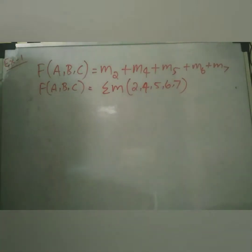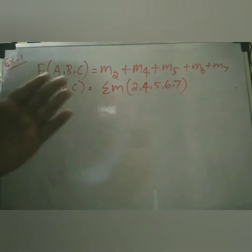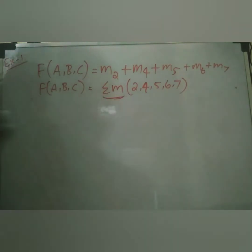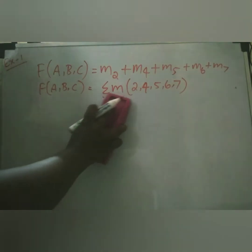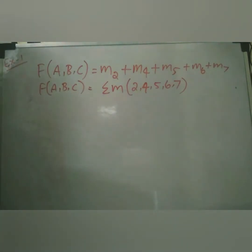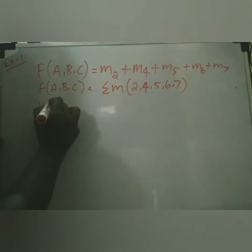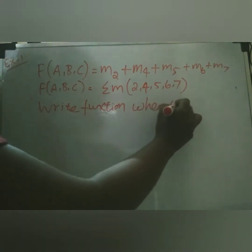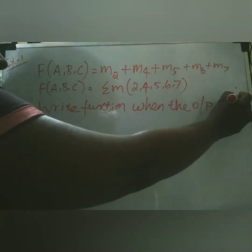Dear students, in this video we are going to solve some problems related to Sum of Product (SOP) and Product of Sum (POS) forms. The first exercise gives function F of A, B, C in terms of min terms (small m). The given form is SOP — Sum of Product — and these are min terms. This is the standard way of representing SOP form using summation of min terms. For SOP, we write the function only when the output is high (1).